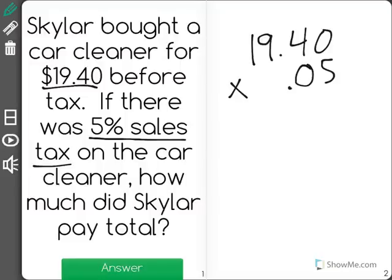.05 is a decimal representation of 5%. When I multiply those two together, you'll see that I get $0.97.